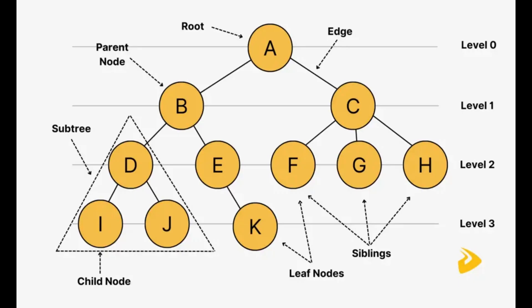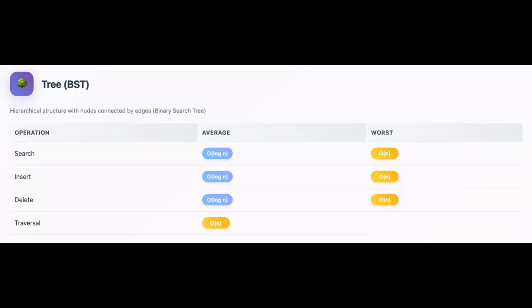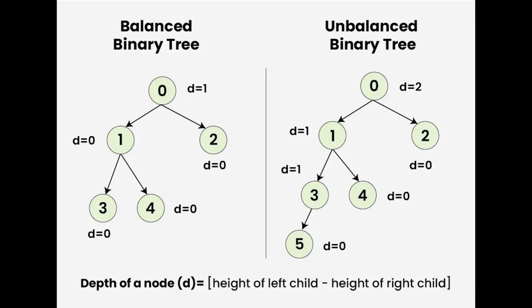Next, we have trees — data organized like a family tree with parents and children. A binary tree is a tree where each node has no more than two children. A binary search tree is special: everything to the left of a node is smaller, and everything to the right is bigger. This makes it fast — often O(log N) — to find, add, and remove things, like looking through a dictionary. But if the tree gets unbalanced, it can act like a slow linked list, and in the worst case it's O(N).